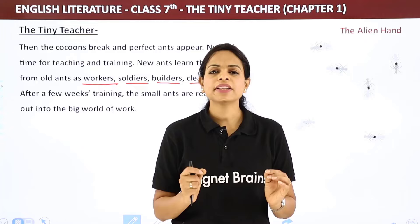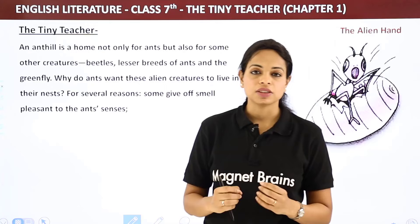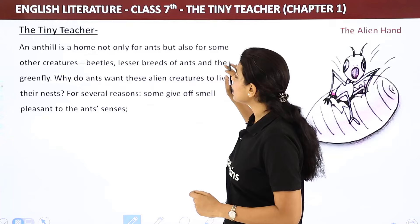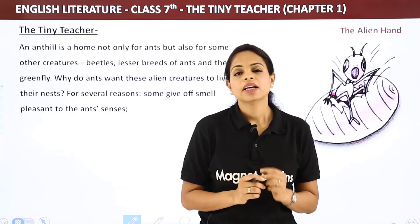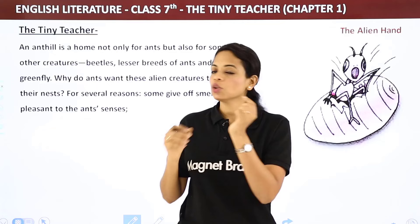An ant hill is a home not only for ants, but also for some other creatures: beetles, lesser breeds of ants, and the green fly. The green fly is very small and can camouflage itself on leaves — that's why it's called green fly. These alien creatures also live inside the ant hill.